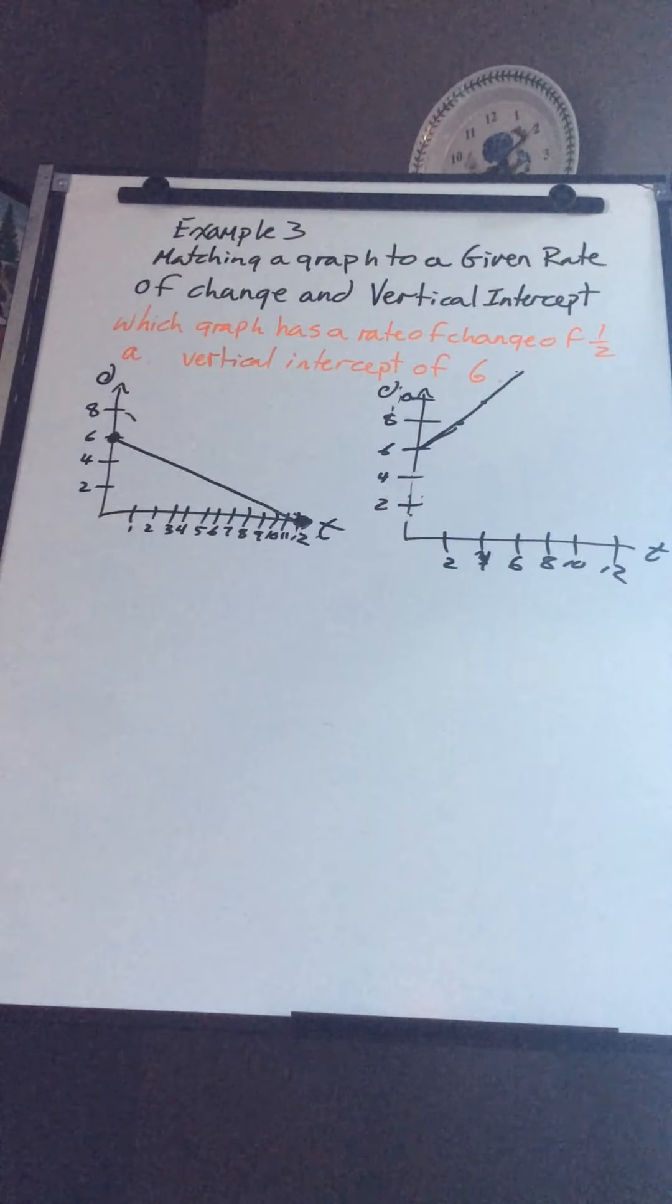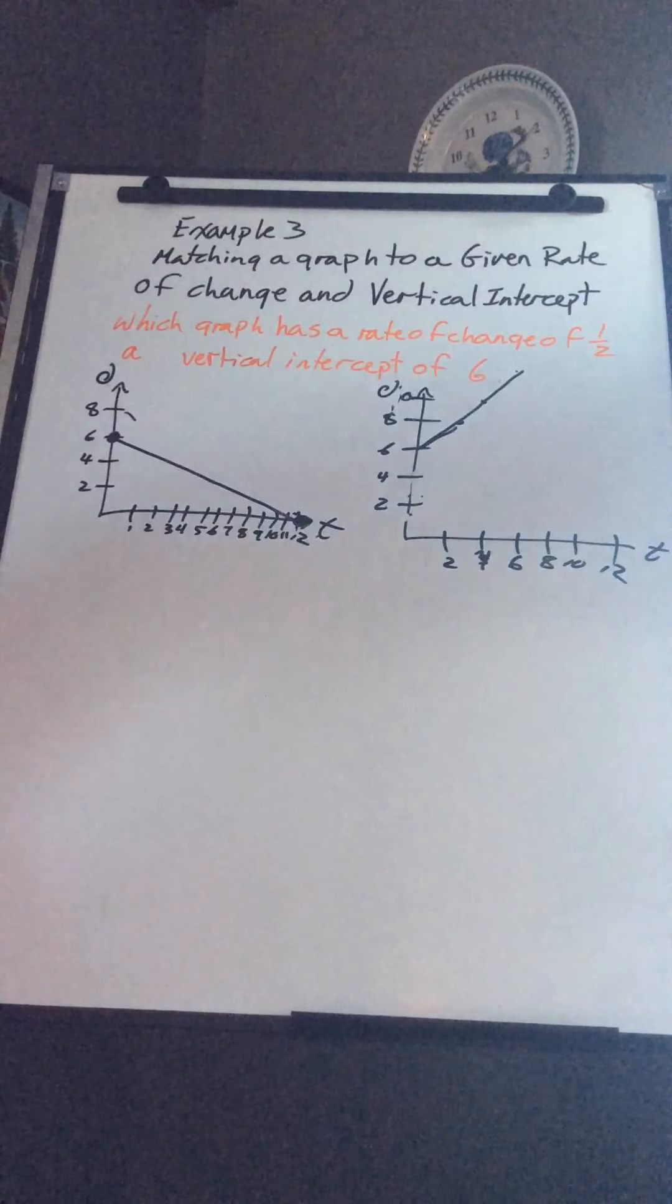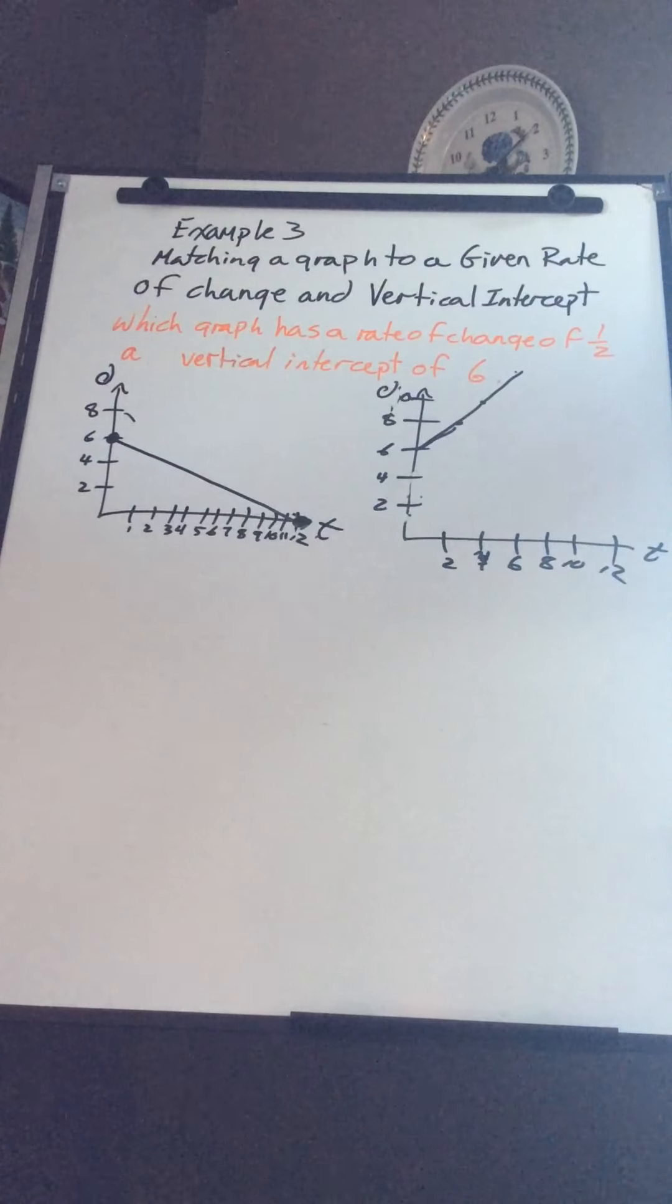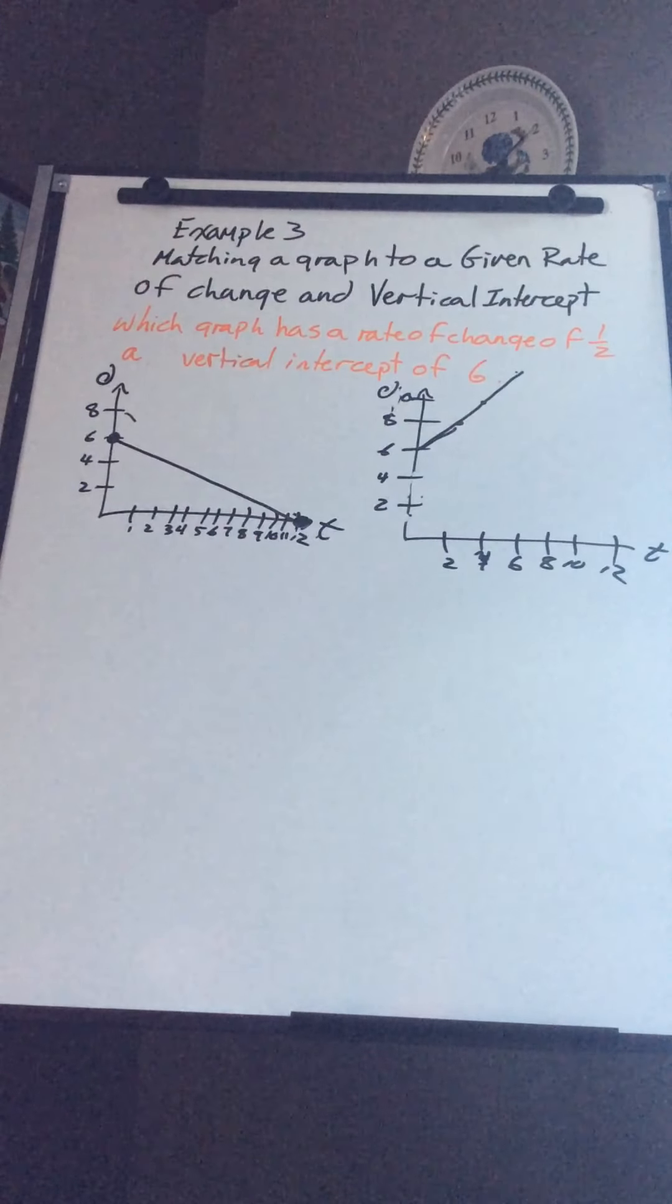I got example three from chapter seven here. We're looking at matching a graph to a given rate of change and a vertical intercept. And check to see if the videos can work perfect.